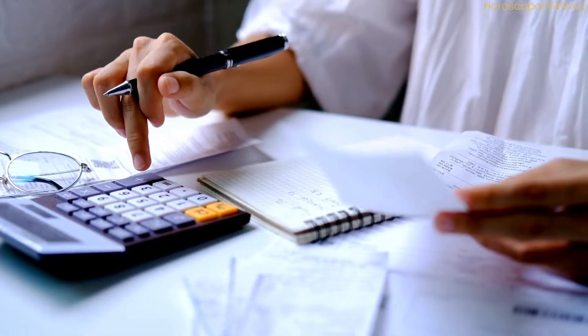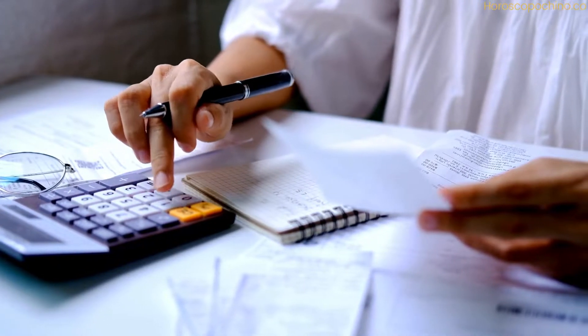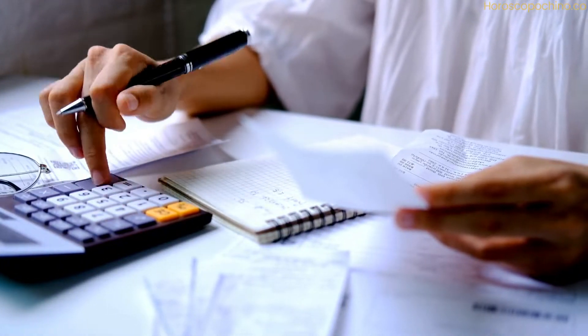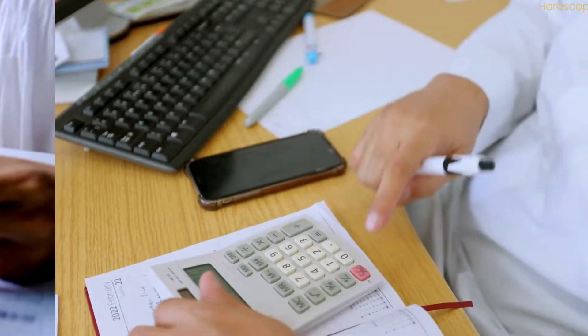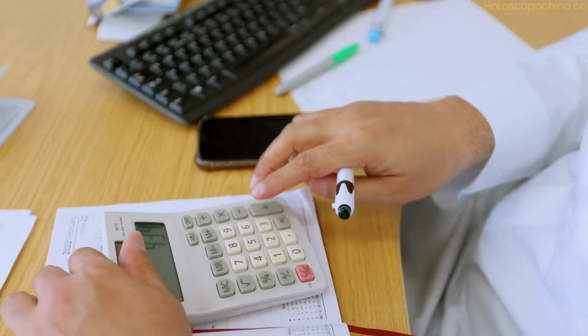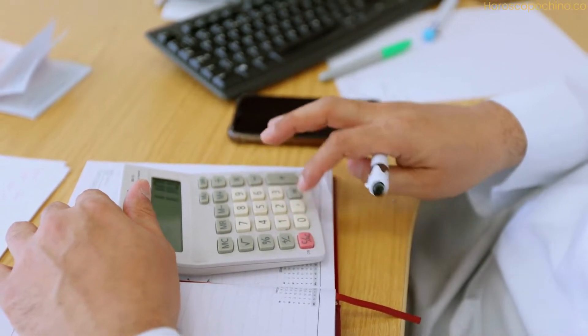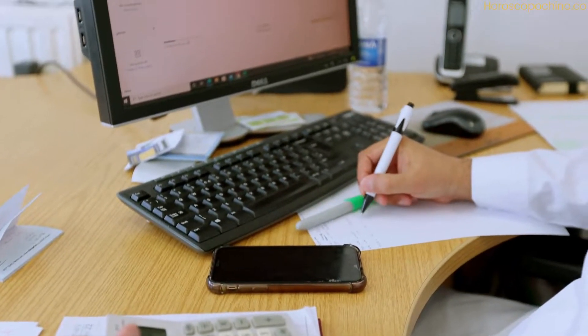Once you have obtained your life number, you can calculate your connection number by adding the digits of your life number with the number 11, which is the universal connection number in numerology. However, if your life number is a master number 11, 22 or 33, you will not need to add the number 11.